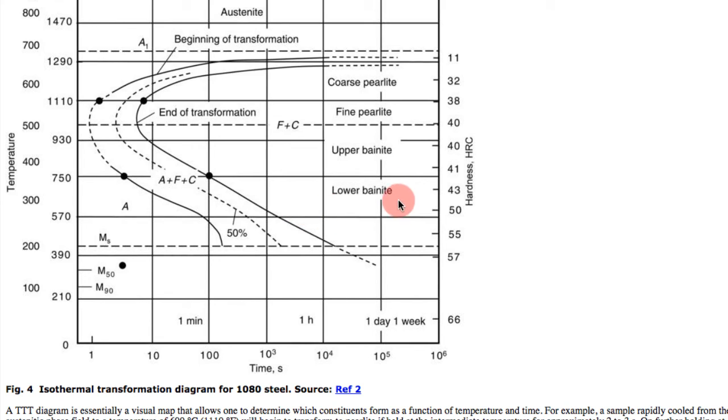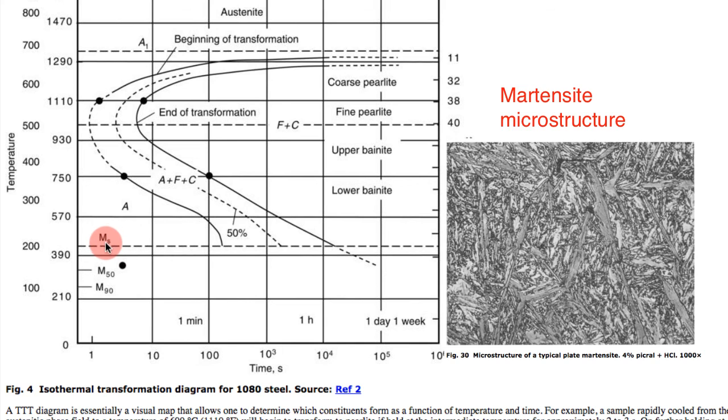I guess you'd have to be a real materials engineering geek to want to understand what it is that these structures are and how they're different. And then there is this line, this MS is what's called the Martensite start line, and M50 is Martensite 50% transformation.